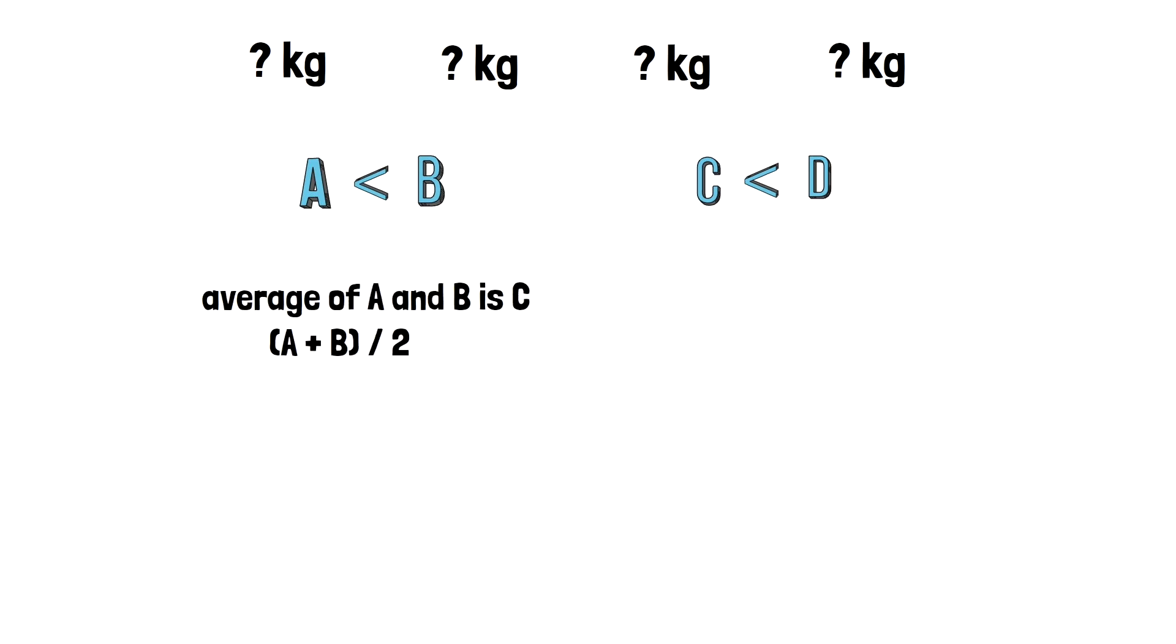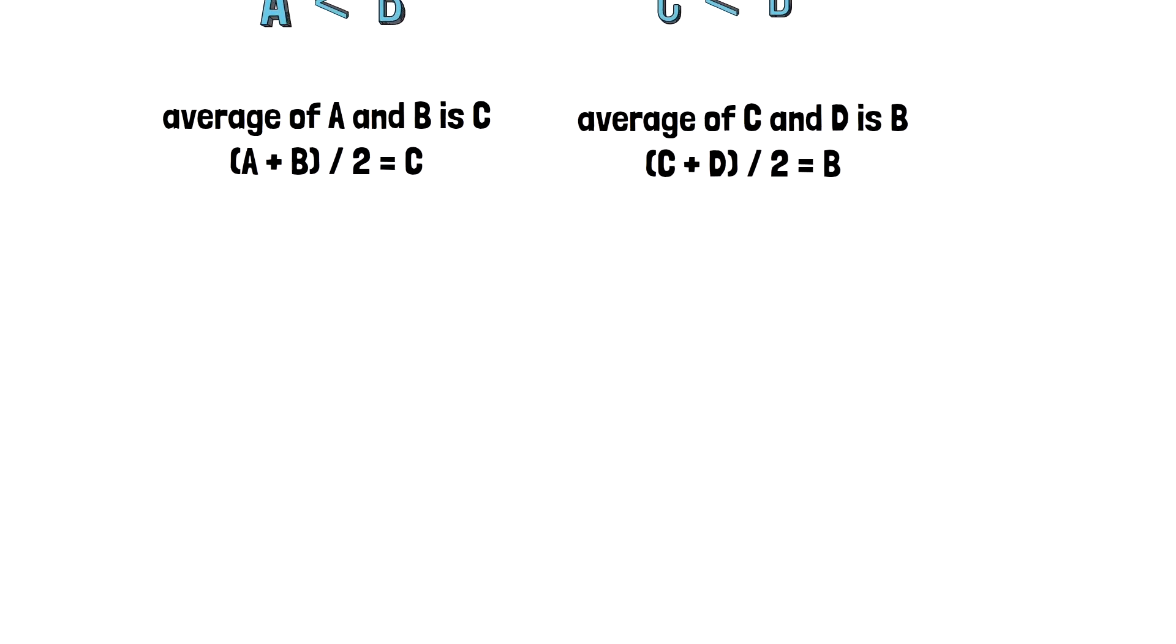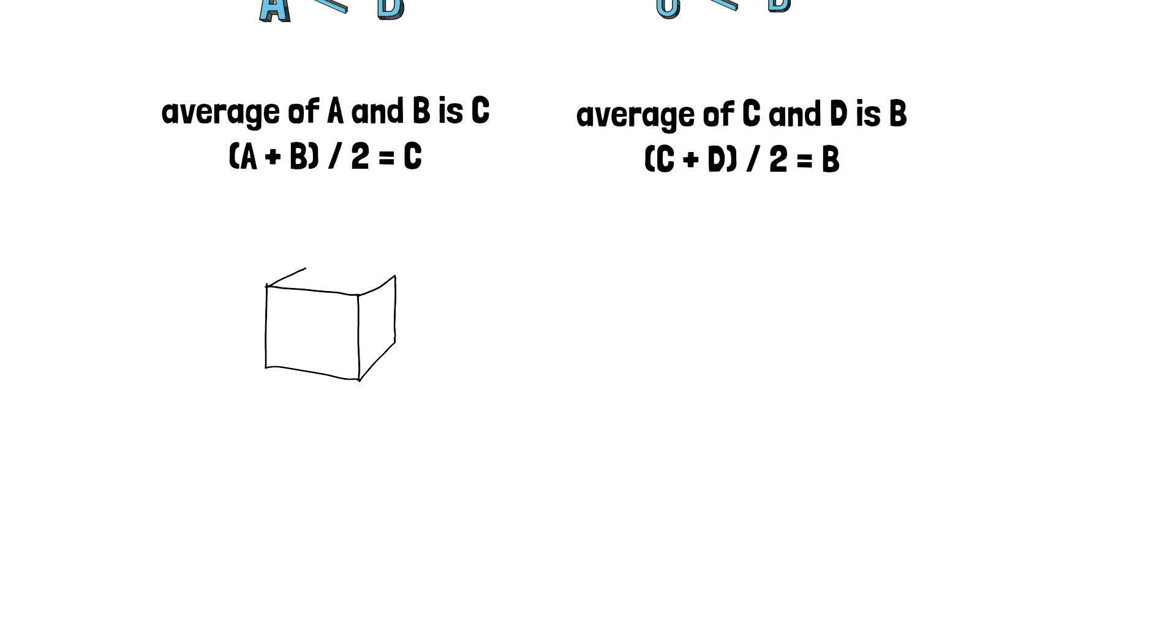Third, we know that the average weight of box A and box B is the weight of box C. And the average weight of C and D is the weight of box B. D minus A is equal to 60 kilograms.